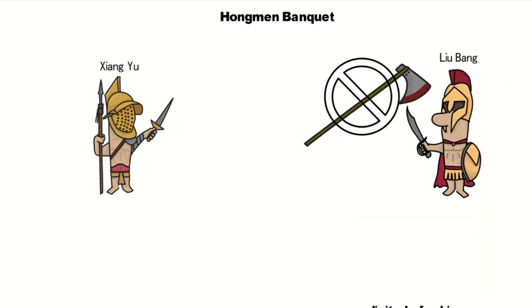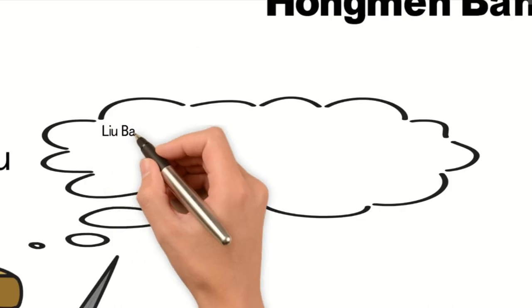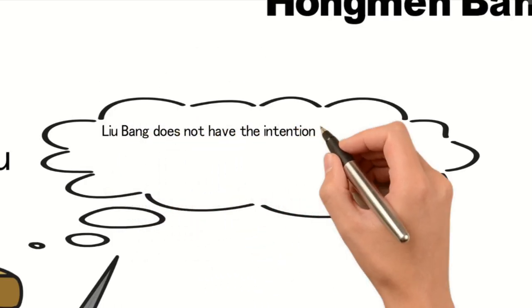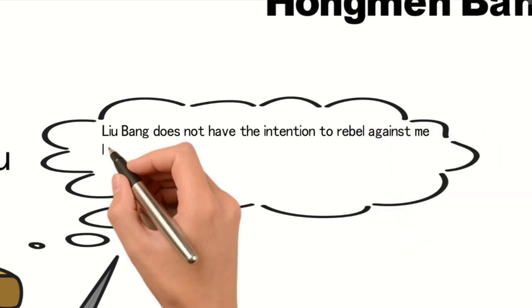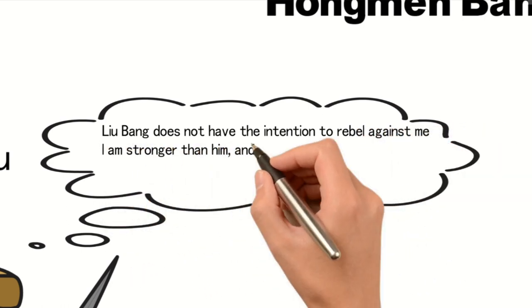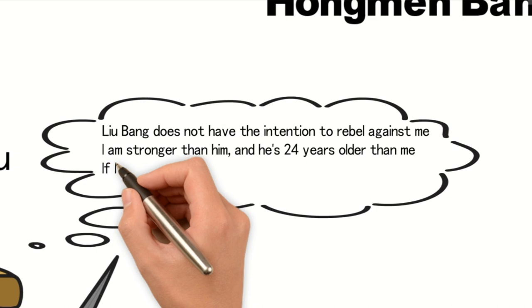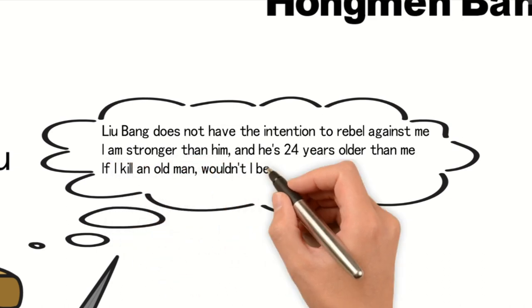However, he refused, saying, Liu Bang does not have the intention to rebel against me. I am stronger than him, and he's 24 years older than me. If I kill an old man, wouldn't I be ridiculed by the world?